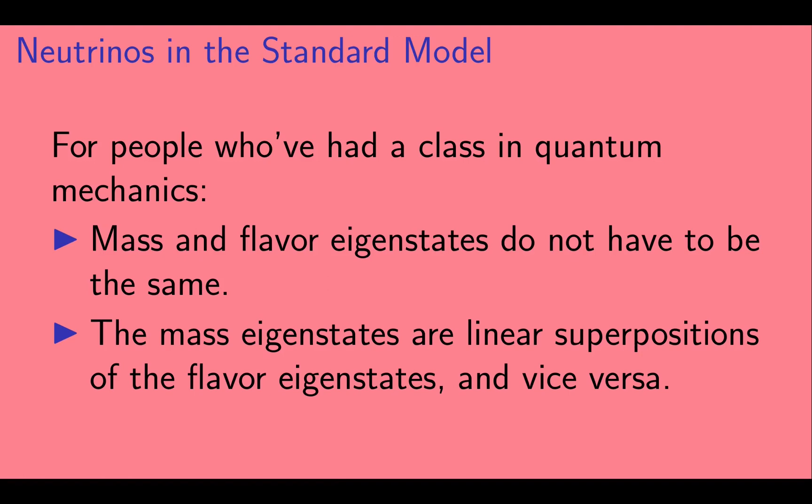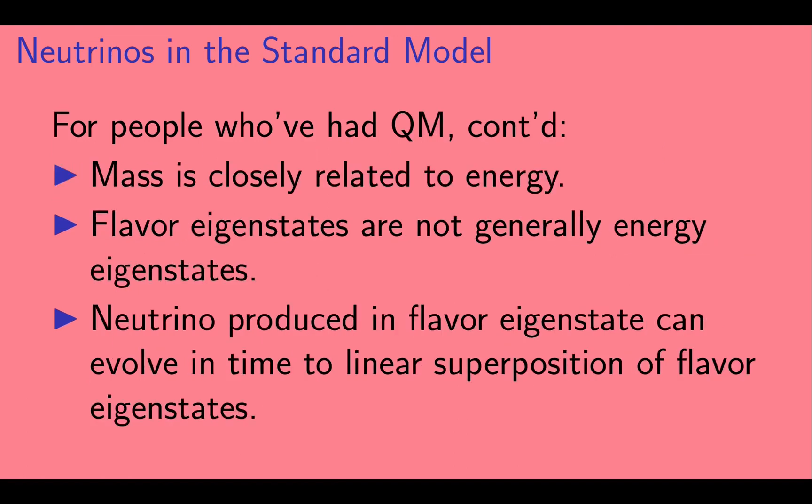The basic points are that mass and flavor eigenstates do not have to be the same. So, the mass eigenstates are linear superpositions of the flavor eigenstates and vice versa. Mass is closely related to energy. So, it's not surprising that flavor eigenstates are also typically not energy eigenstates. So, a neutrino produced in a flavor eigenstate can evolve in time to a linear superposition of flavor eigenstates.